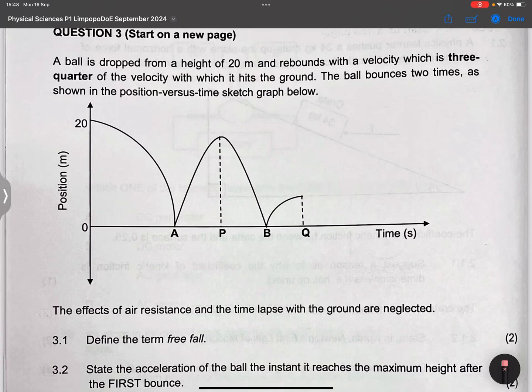And now let's go on to question three. A ball is dropped from a height of 20 meters and rebounds with a velocity of three-quarter of the velocity with which it hits the ground. The ball bounces two times as shown in the position versus time graph below.